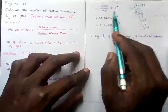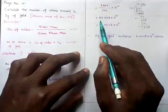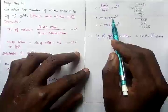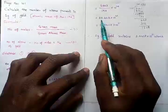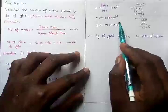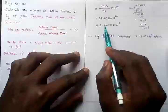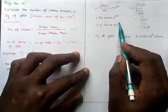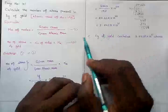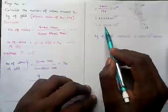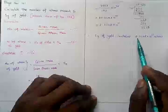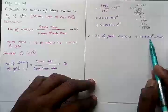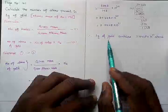Now converting 30.428 × 10²⁰ into proper scientific notation: moving the decimal one place gives 3.0428 × 10²¹. Therefore, 1 gram of gold contains 3.0428 × 10²¹ atoms.